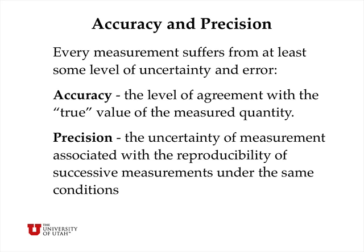Every scientific measurement suffers from at least some level of uncertainty and error, because there is no perfectly accurate way of measuring anything. There are two qualitatively different characteristics of this uncertainty. Accuracy is the level of agreement with the true value of a measured quantity. Precision is the uncertainty associated with the reproducibility of successive measurements under the same conditions — essentially a measure of the wobble in an instrument.